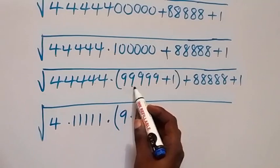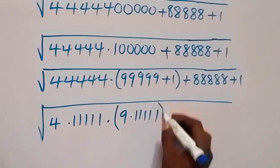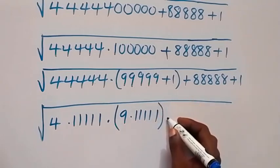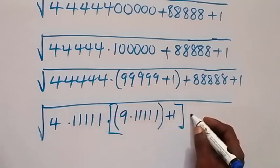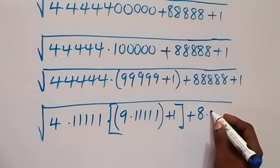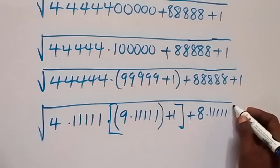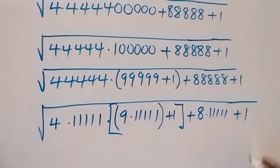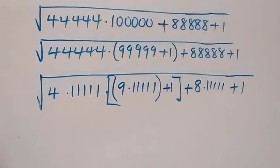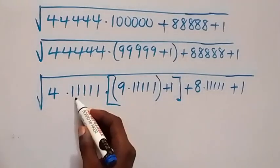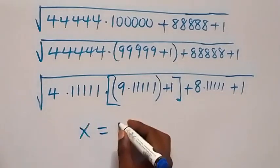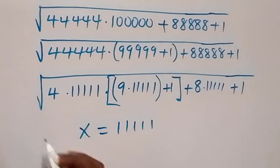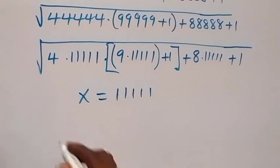From here, plus 1. Then we close the bracket, and plus we can write 8 times 11111, then plus 1. In the next step, 11111 is common here, so we can use a letter to represent that. Now let x equal 11111.